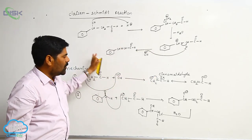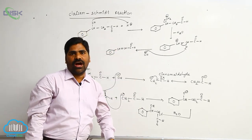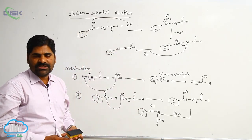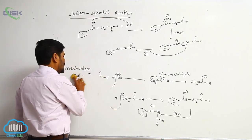Which product? The aldol product. This is an example of the Claisen-Schmidt reaction. Now, second example.